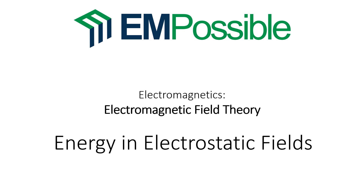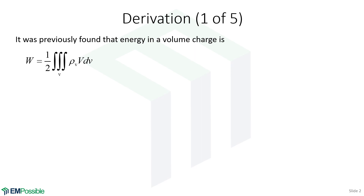Energy in electrostatic fields. Remember previously, we found the energy for a volume charge distribution. We built up to it by doing an ensemble of point charges, looked at that equation, and generalized it to a volume. We ended up with an expression that is essentially adding up one-half Q times V.